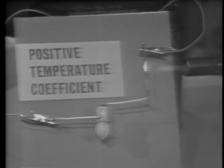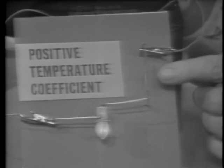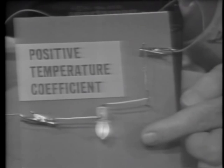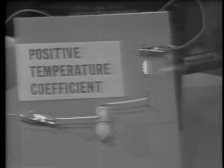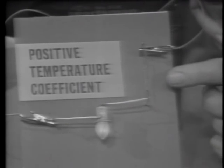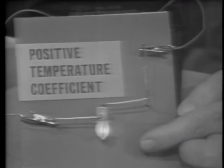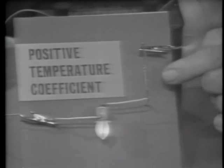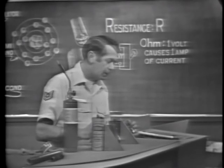Applying heat to the tungsten — notice that the bulb goes out. The resistance of the tungsten has gone up, which reduced the current through the bulb. When I take the heat away and the tungsten starts to cool off, its resistance goes down and current flows through the bulb again. As I apply heat, resistance goes up; less current through the bulb. When I remove the heat, the tungsten cools, resistance goes down, and current increases. If resistance goes up when the material gets hotter, the material has a positive temperature coefficient. Tungsten has a positive temperature coefficient.